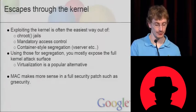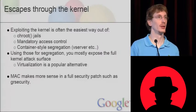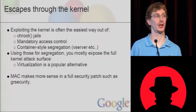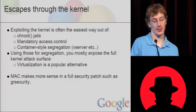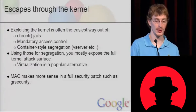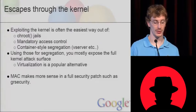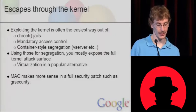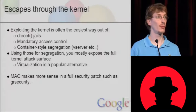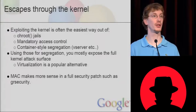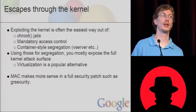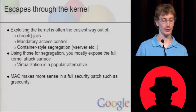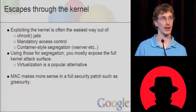Escaping through the kernel — exploiting the kernel is often the easiest way out of basically all kinds of sandboxing techniques. Old-school ones such as chroot jails, which have been used forever. Mandatory access control, which has been gaining traction in Linux for the last ten years, but is still not really widely used. Container-style segregation such as VServer. On Linux and Windows, using those for segregation still mostly exposes the full kernel attack surface, which is why virtualization is a popular alternative — as an attacker you'd have to attack the virtualization layer instead of just a kernel to escape a chroot jail or traditional sandbox.